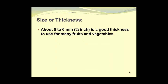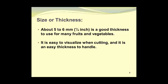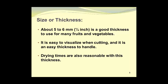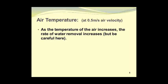About 5 to 6 mm, or a quarter of an inch, is a good thickness to use for many fruits and vegetables. It's easy to visualize when cutting, easy to handle, and drying times are reasonable with this thickness.